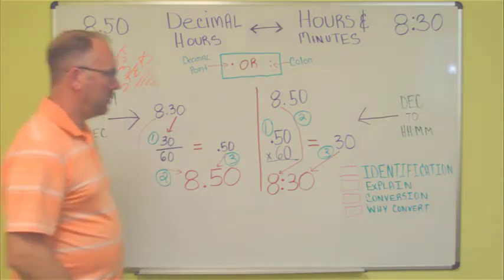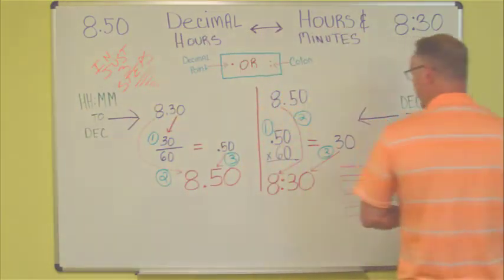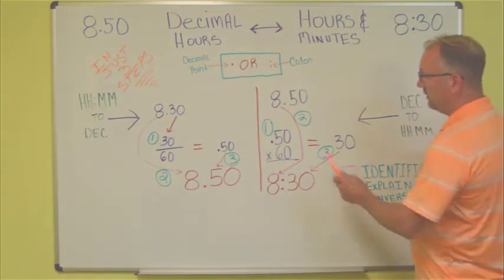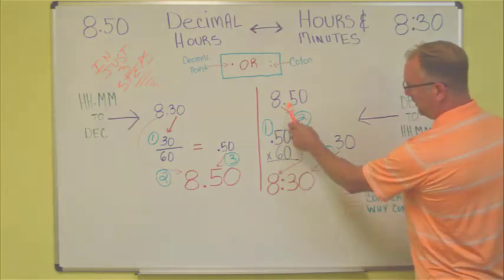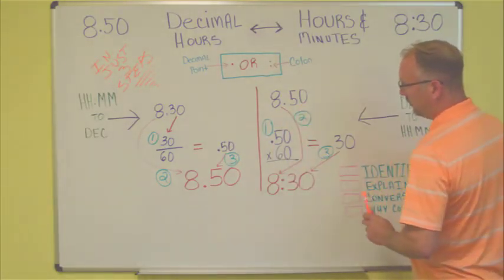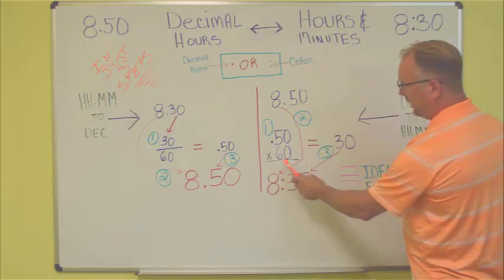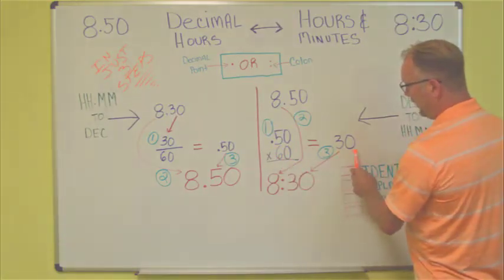Next, we'll want to go back from decimals to hours and minutes. Here, we'll start out with our 8.50 hours. The first step is to take the .50, the decimal portion, and multiply that by 60. .50 times 60 is equal to 30.